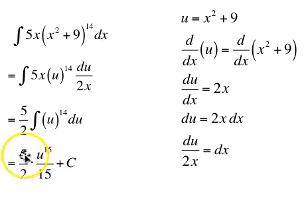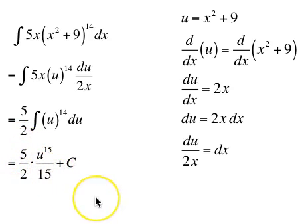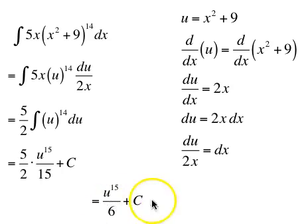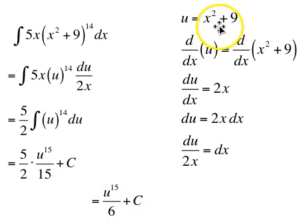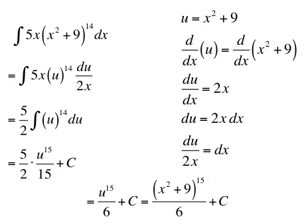So we get 5 halves times u to the 15th over 15 plus c. 5 on top and 15 on the bottom results in a 3 downstairs, and 2 times 3 is a 6 downstairs, giving us u to the 15th over 6 plus c. We cannot leave our final answer in terms of u, so we replace u with x squared plus 9. The final answer is x squared plus 9, all to the 15th, over 6 plus c.